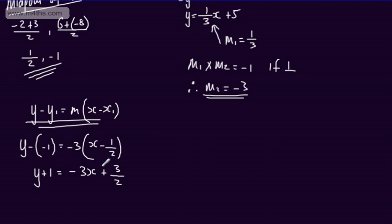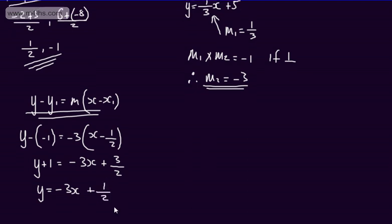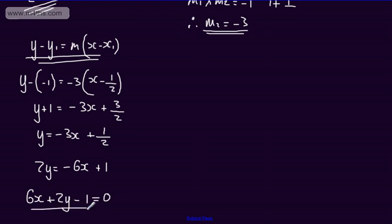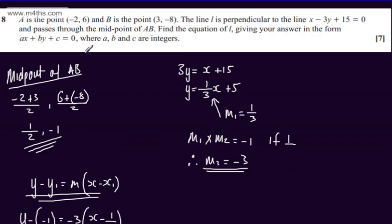I could subtract 1 from both sides, which would give me y is equal to minus 3x plus 1 half. I'm now going to multiply both sides of the equation by 2, so we'd have 2y is equal to minus 6x plus 1. Adding 6x to both sides: 6x plus 2y, then subtract 1 from both sides, which gives us 6x plus 2y minus 1 is equal to 0. So we can see that A is 6, B is positive 2, and C is minus 1. So we get 7 marks in total for question number 8.